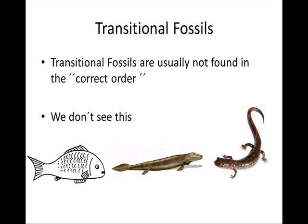Also, transitional fossils are usually not found in the correct order. We don't see fish, then Tiktaalik or any other so-called half-fish half-tetrapods, and then fully formed tetrapods. We actually find tetrapods older than Tiktaalik and all the other supposed transitional forms from fish to tetrapods. In most cases, transitional fossils are not found in the order predicted by evolution. What evolutionists always do is get the fossils, put them in the order they want, and then claim this is evidence for evolution.